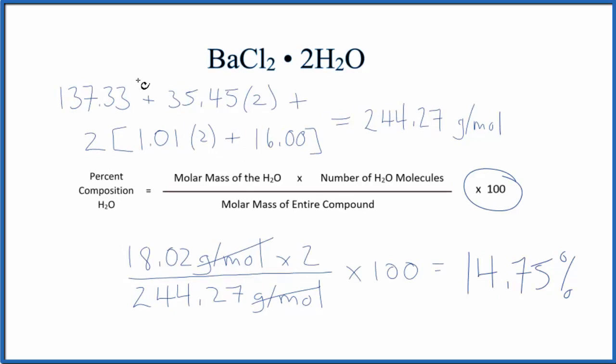Note that my periodic table rounds to two decimal places. If your periodic table rounds to a different number of digits there, you might have a slightly different answer out here. This is Dr. B with the molar mass for BaCl2·2H2O, barium chloride dihydrate. Thanks for watching.